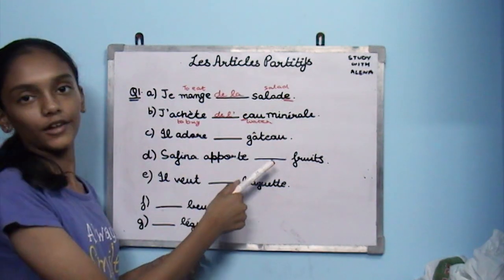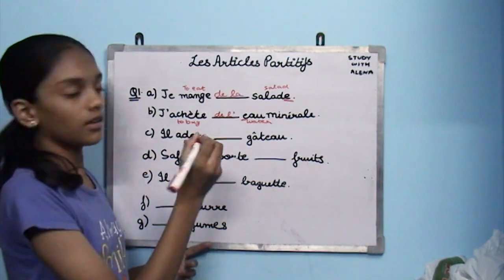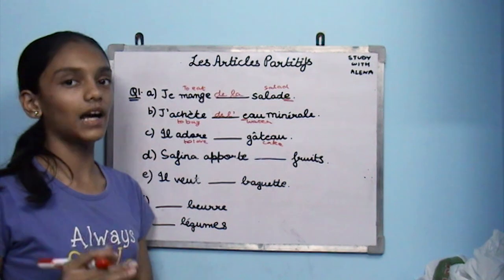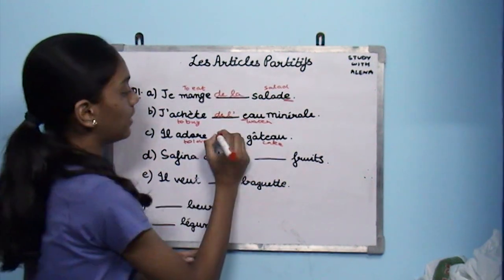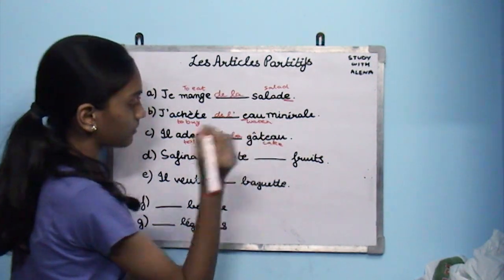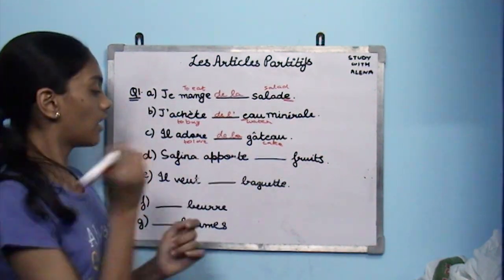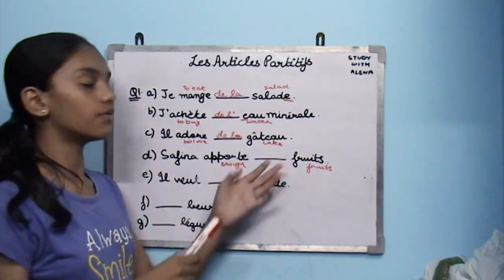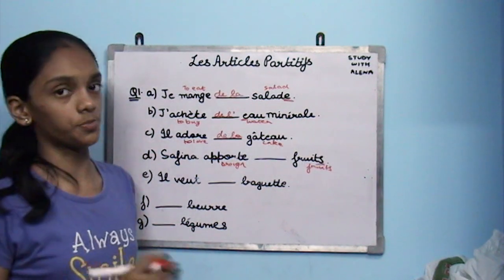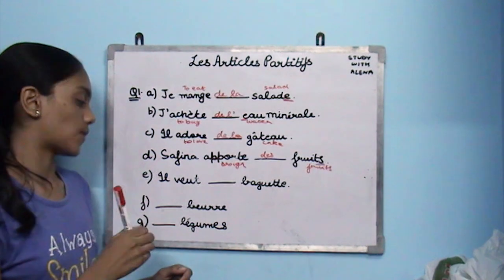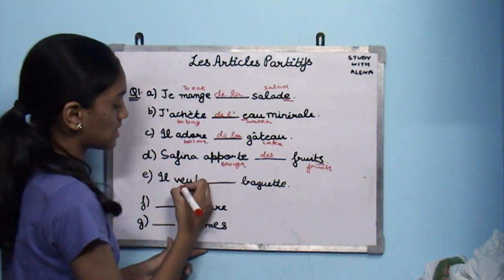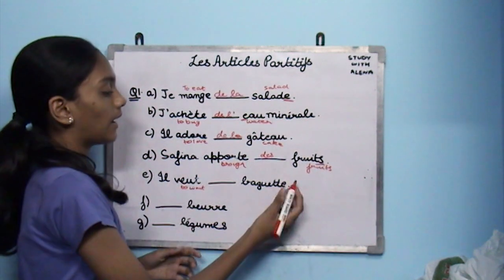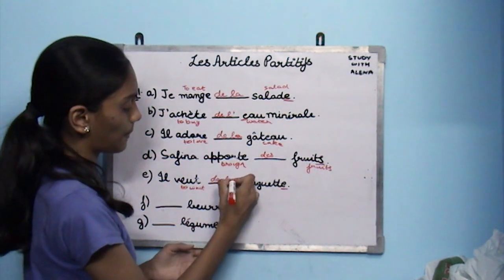Next: il adore ___ gâteau. Adorer is to love. Gâteau is cake. It will be de la because gâteau is feminine — it's an exception. Next: Safina apporte ___ fruits. Apporter is to bring. Fruits has an S at the end, which makes it plural, so we use des fruits. Next: il veut ___ baguette. Vouloir is to want. Baguette is a type of French bread. It has an E at the end, which makes it feminine, so de la baguette.